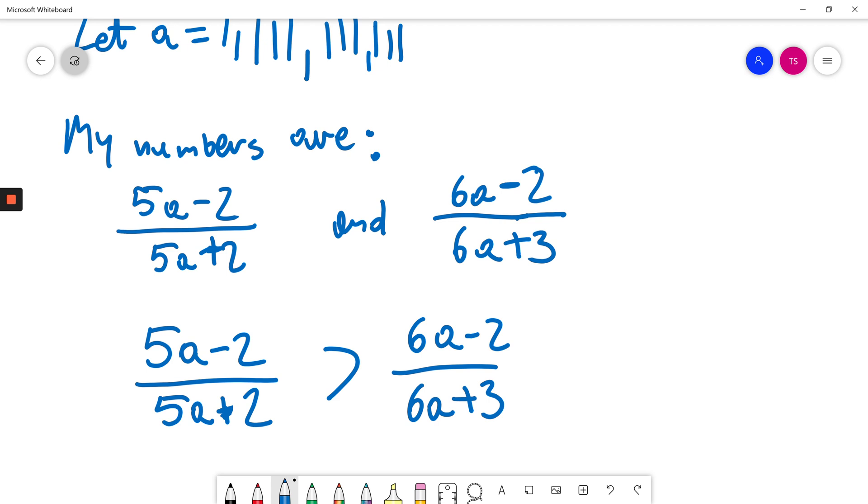The denominators are positive for such a big positive number A. So I will multiply both sides of this inequality by both denominators.